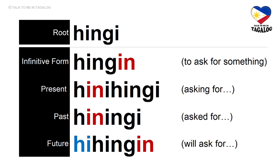Root word: hingi. Infinitive form: hingin — meaning to ask for something. Present tense: hinihingi — asking for something. Past tense: hiningi — asked for something. Future tense: hilingin — will ask for something.